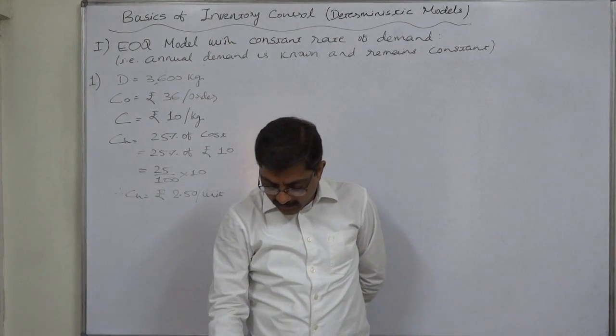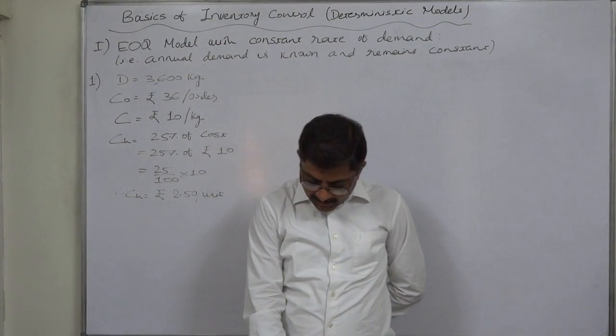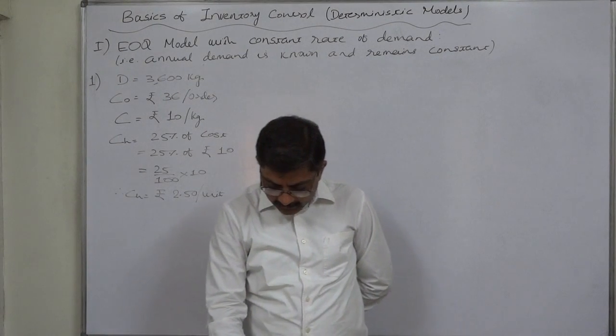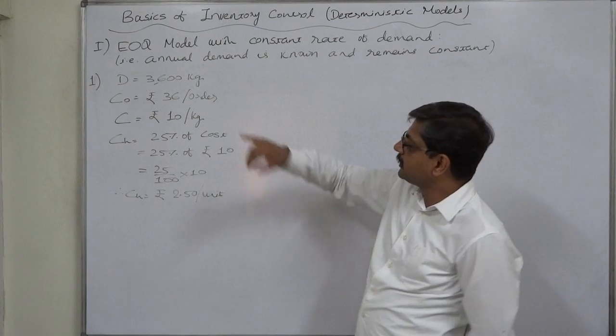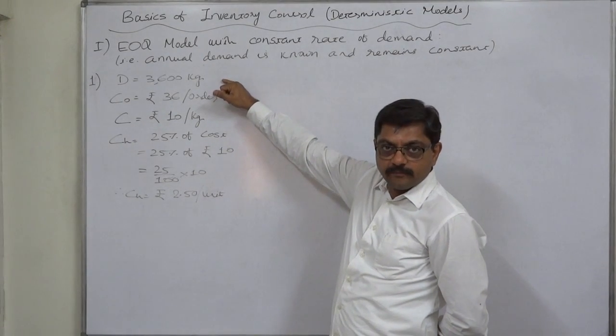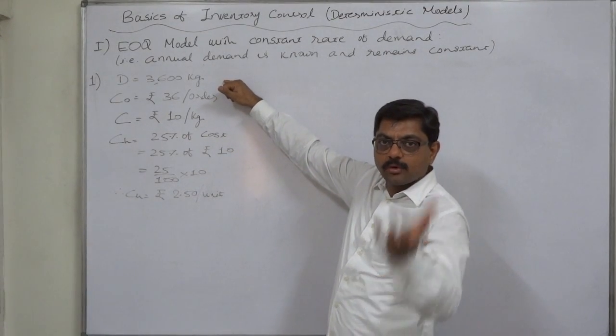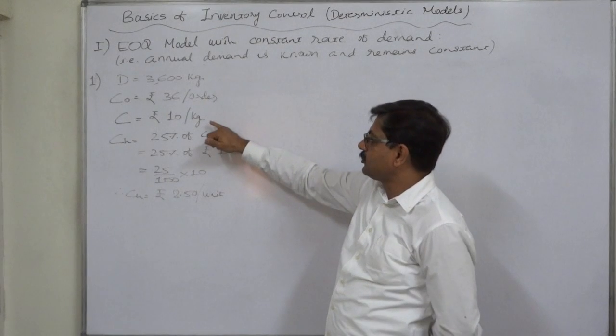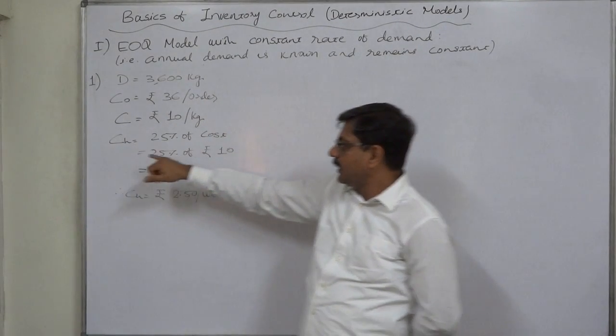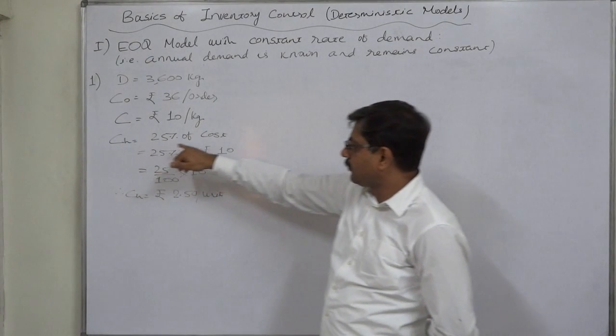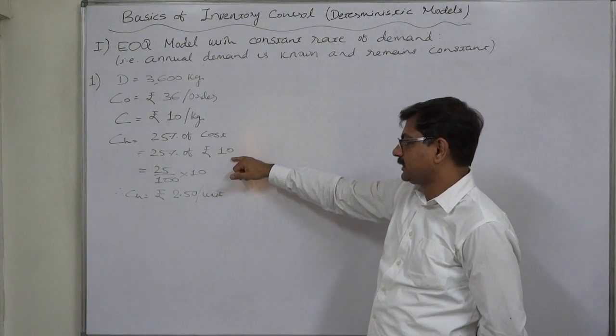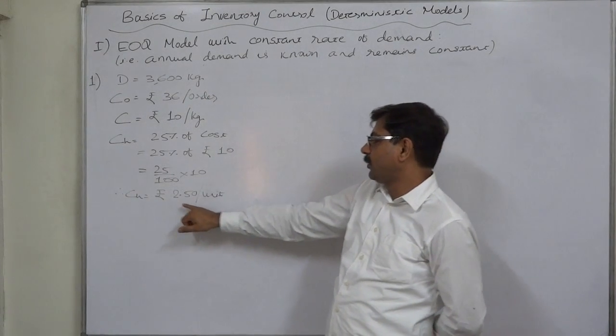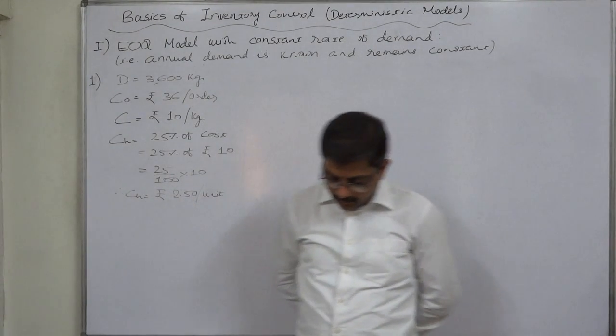Now, what is cost of inventory? The price of Rs.10 per kg. Yes, the price is Rs.10 per kg. Price of what? The price of the item which is here included in the inventory is Rs.10. So, we can now interpret that the cost of holding is 25% of Rs.10 per unit. That is Rs.2.50 per unit per annum.